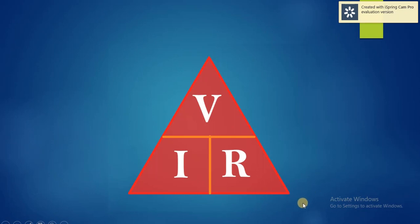For finding out the voltage, we have to just cover the voltage and write down the remaining terms with the sign in between them, therefore V equals I times R.